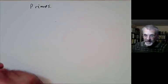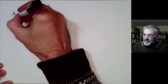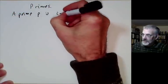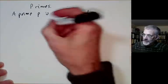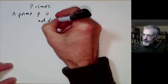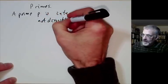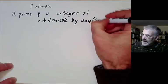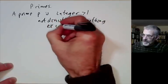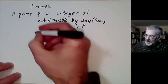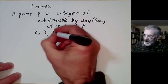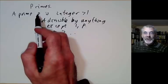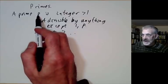I'll recall the definition of a prime. We define it for positive integers. A prime p is an integer greater than 1, not divisible by anything except 1 and p. The first few primes are 2, 3, 5, 7 and so on. The letter p is often used for prime numbers — p obviously stands for prime.